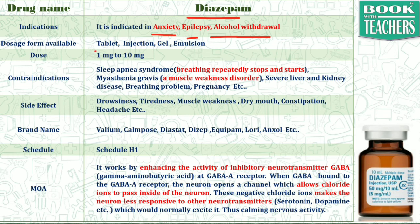The dosage forms available are mostly tablets, injections, gel, and in very rare cases, emulsions as well. The recommended doses for Diazepam are 1 mg to 10 mg. 10 mg may lead to a toxic effect, so that is the extreme dose that can be given to the patient.